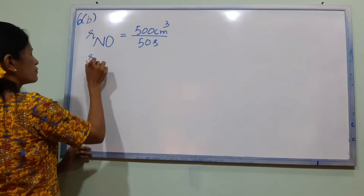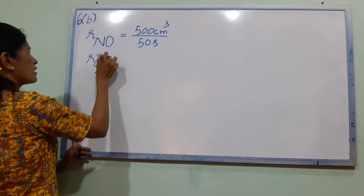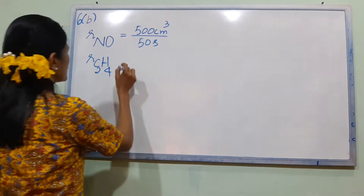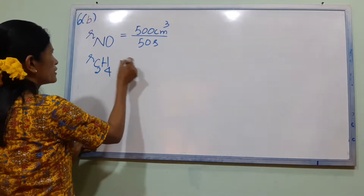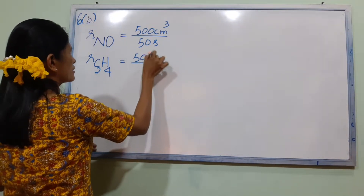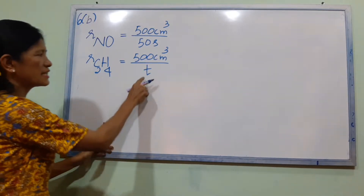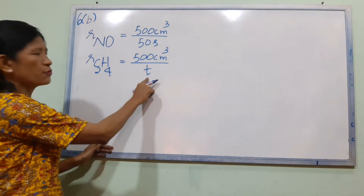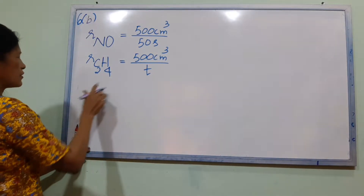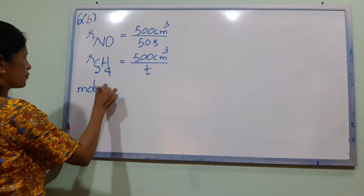Rate of diffusion of C2H4 is equal to 500 cm³. If you want to solve this, we will use molar mass.